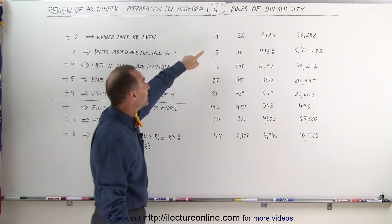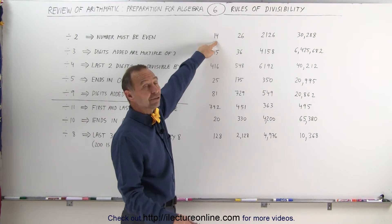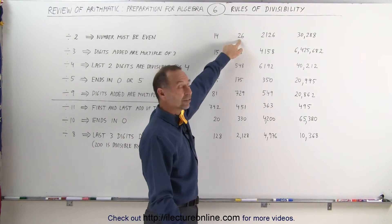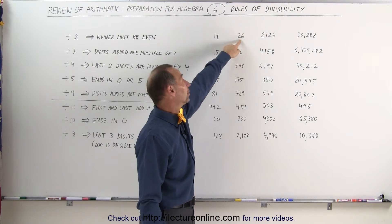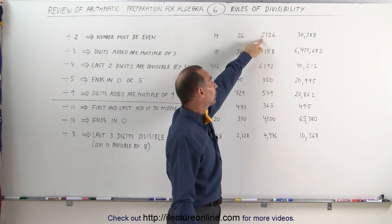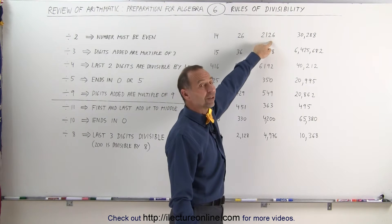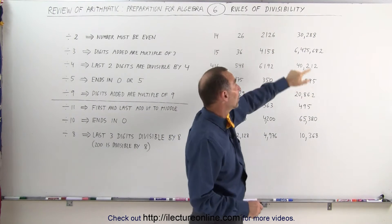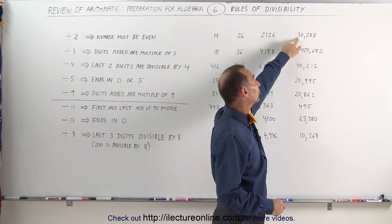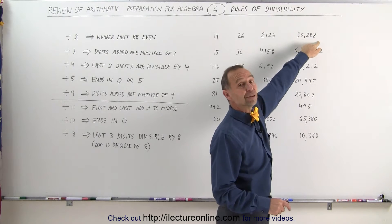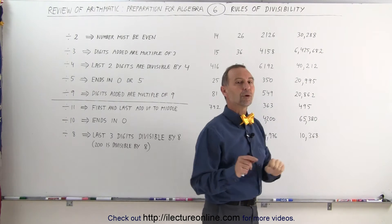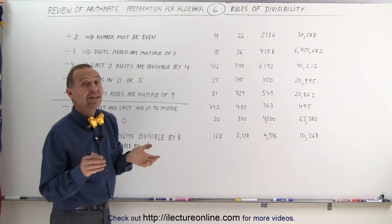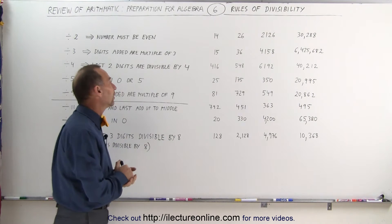For example, 14 ends in a 4 — that's an even number, so it's divisible by 2. 26 ends in a 6 — that's an even number, so that's divisible by 2. 2,126 again ends in a 6, so it's divisible by 2. And 30,288 is even because it ends in an 8, therefore it's divisible by 2. Any number that ends in an even digit is divisible by 2.